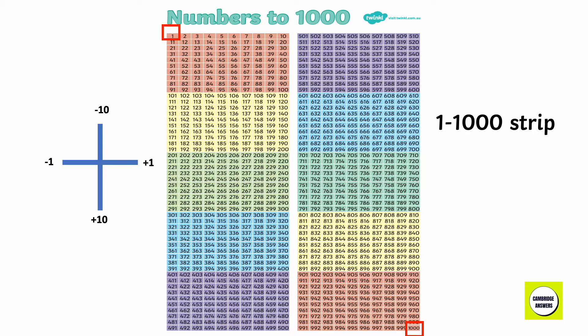A one to one thousandth strip has numbers that start with 1 and end with 1,000. To move up, just like the hundredth square, we subtract 10. When we want to move down, we add 10. When we want to move forward, we add 1. And when we want to move back, we subtract 1.